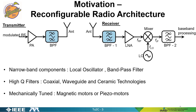Having looked at the applications, let us see a typical architecture of a tunable radio. In this architecture, the power amplifier, antenna, low noise amplifier, and mixers are inherently wideband components. The local oscillator is easily tuned using a PLL. Hence, the bottleneck for successful realization of a tunable radio is a high-Q tunable bandpass filter.